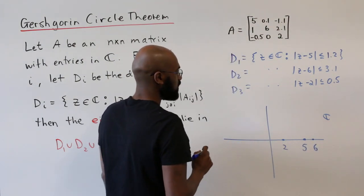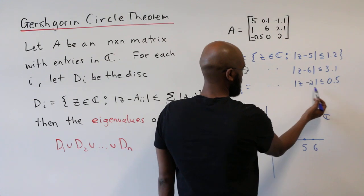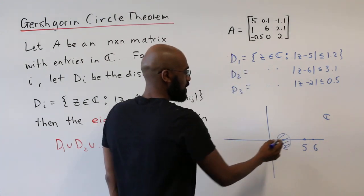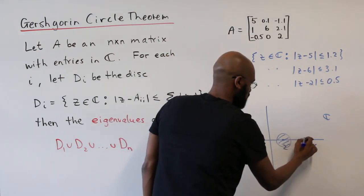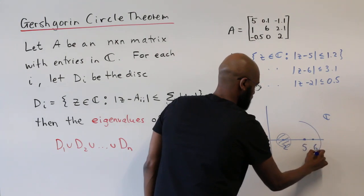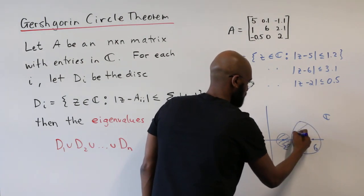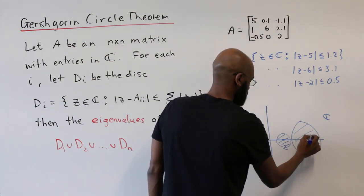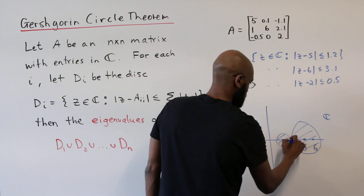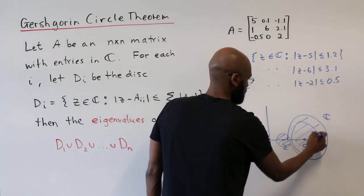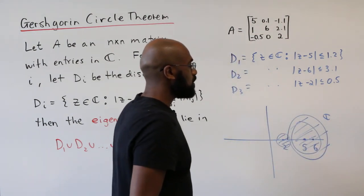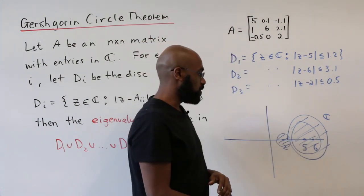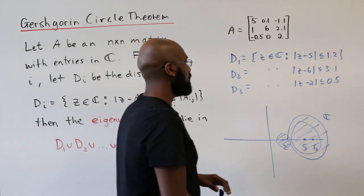And we draw corresponding disks. So around 2, we have a disk of radius 0.5. Around the point 5, we have a disk of radius 1.2, so it's going to engulf 6, but not touch 2. And then around 6, we have a circle of radius 3.1, so that'll look something like maybe this. Then, the eigenvalues of the matrix A have to lie somewhere in this circle, the union of these circles.